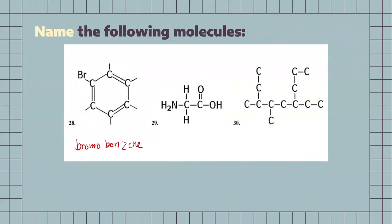For the next one, this one might look very familiar if you've taken AP Bio, but just breaking it down based on the functional groups: we have our amine group, we have our carboxylic acid. And because there's two carbons, we know that it's going to have eth somewhere in there. Adding everything together — the amino, eth, and for the carboxylic acid, we know it's going to end in oic acid. So, it would be aminoethanoic acid. The term you're most likely familiar with, if you've taken AP Bio, would be glycine.